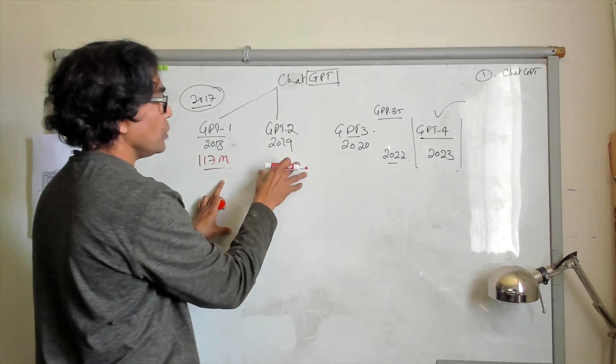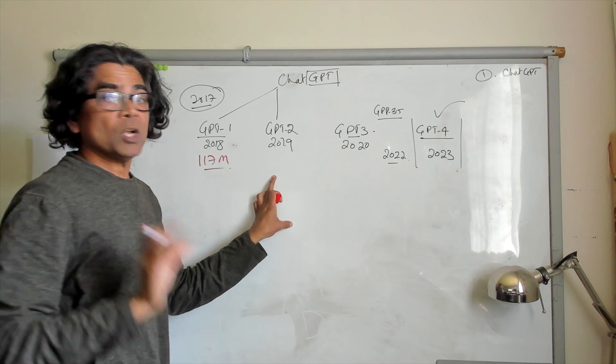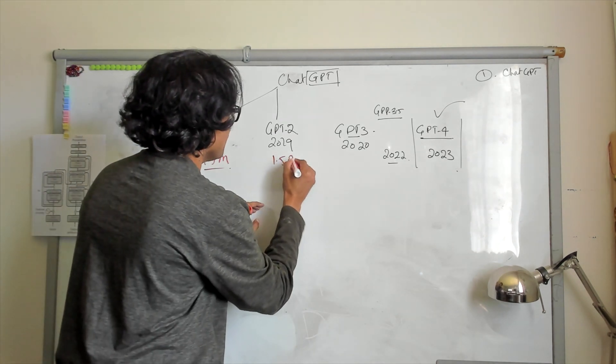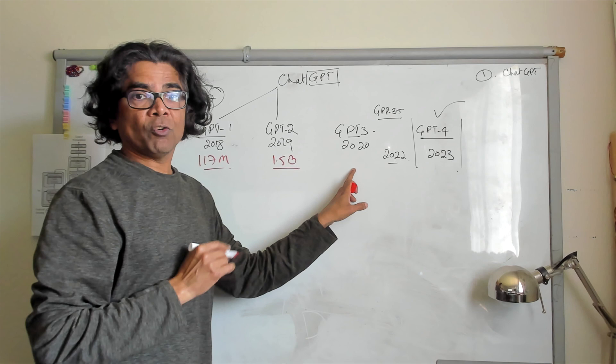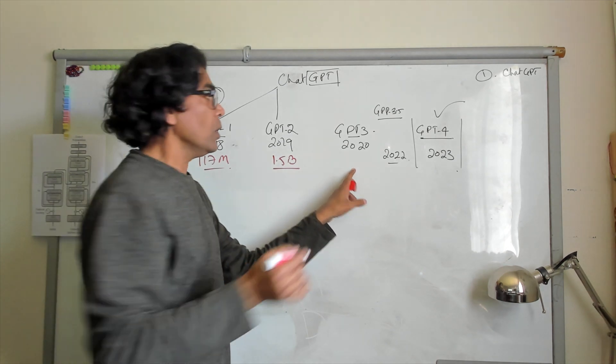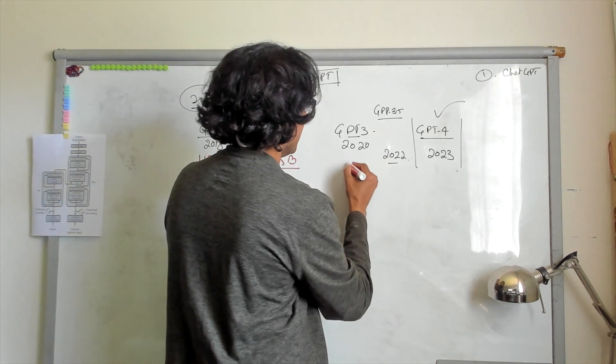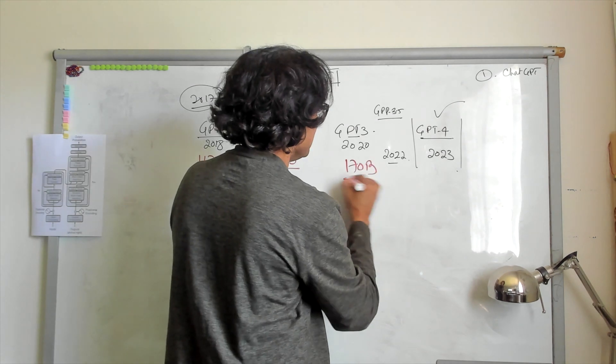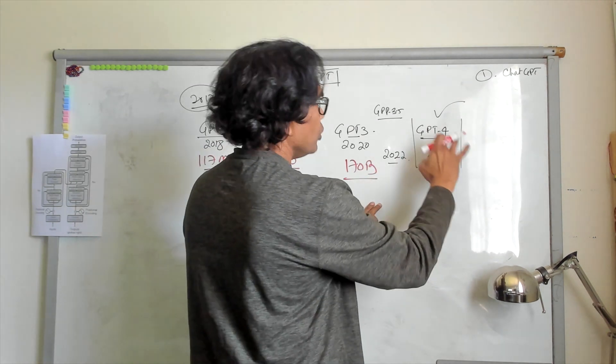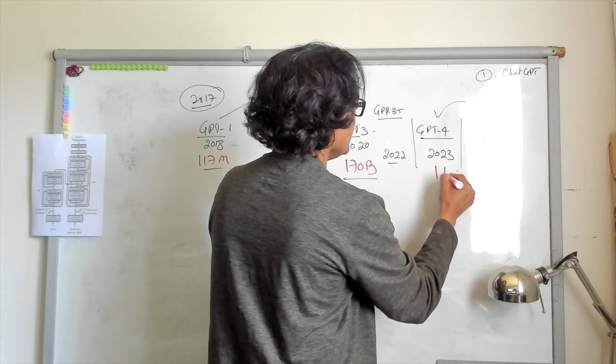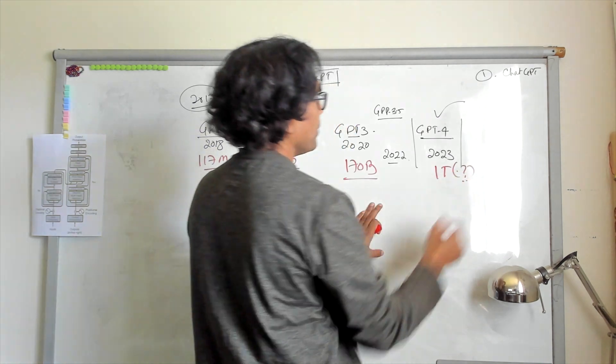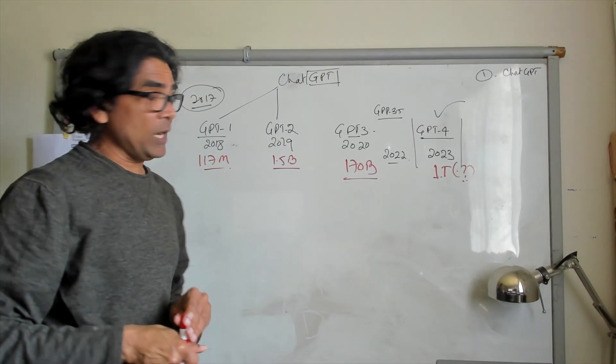The second one, GPT-2, actually had about 1.5 billion parameters. And then GPT-3 and GPT-4, as we really go, you can see that GPT-3 has about 170 billion parameters, and GPT-4 is supposed to have 1 trillion parameters when it's going to be publicly available.